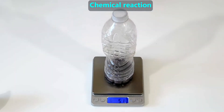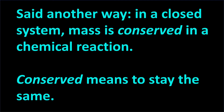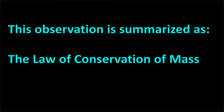At the end of the experiment, the tablet is gone and the bottle seems to have partially inflated since its volume is now larger. We find the mass, and it is exactly the same as it was before the chemical reaction. This experiment tells us that in a closed system, the mass of the matter stays the same before and after a chemical reaction. We can say this another way: in a closed system, mass is conserved in a chemical reaction. The word conserve means to stay the same, and this observation is officially called the law of conservation of mass.